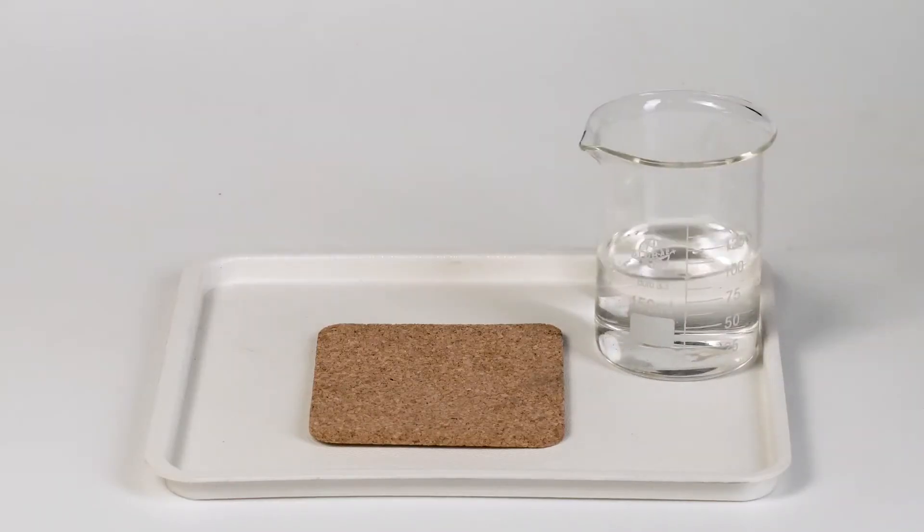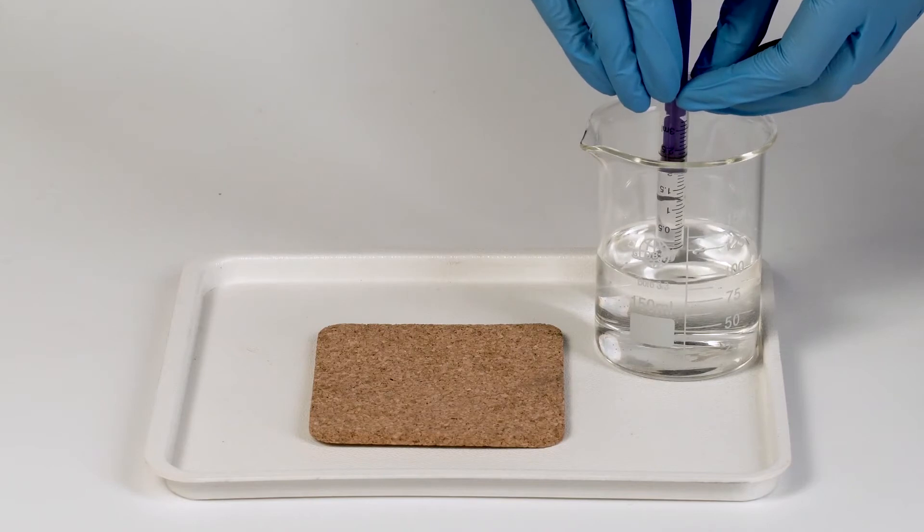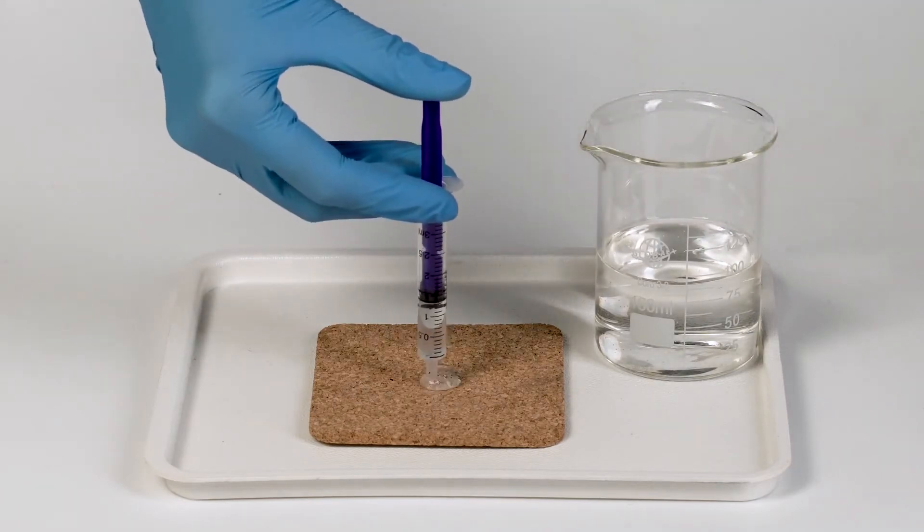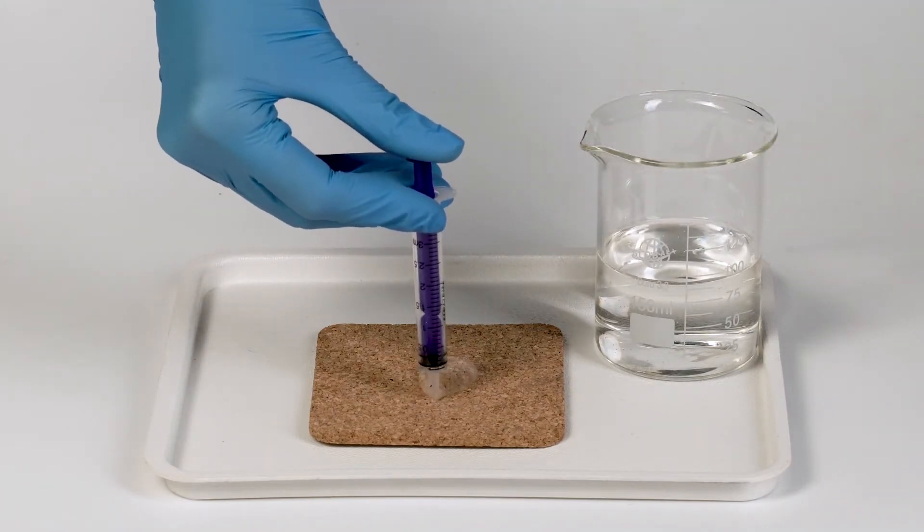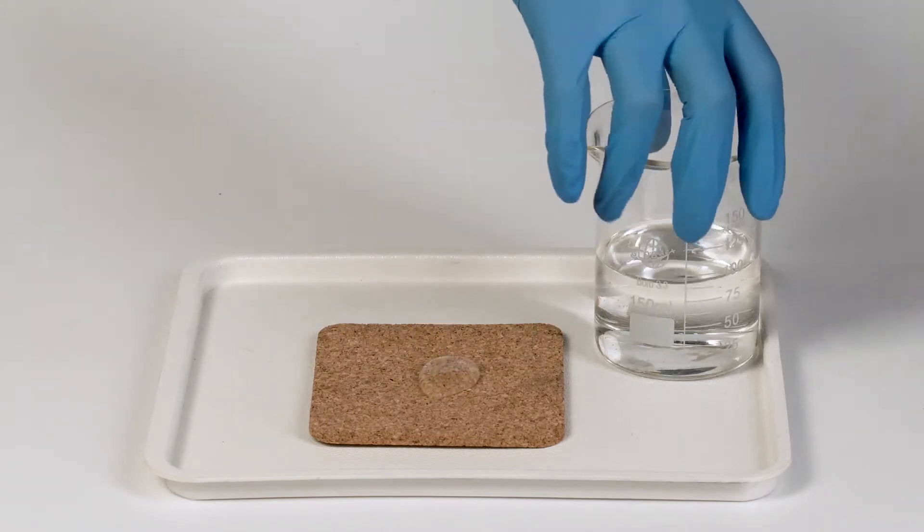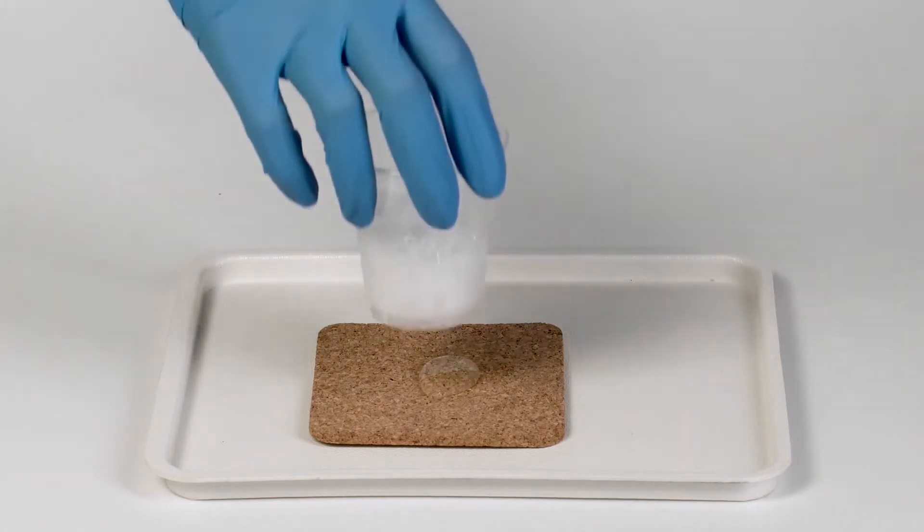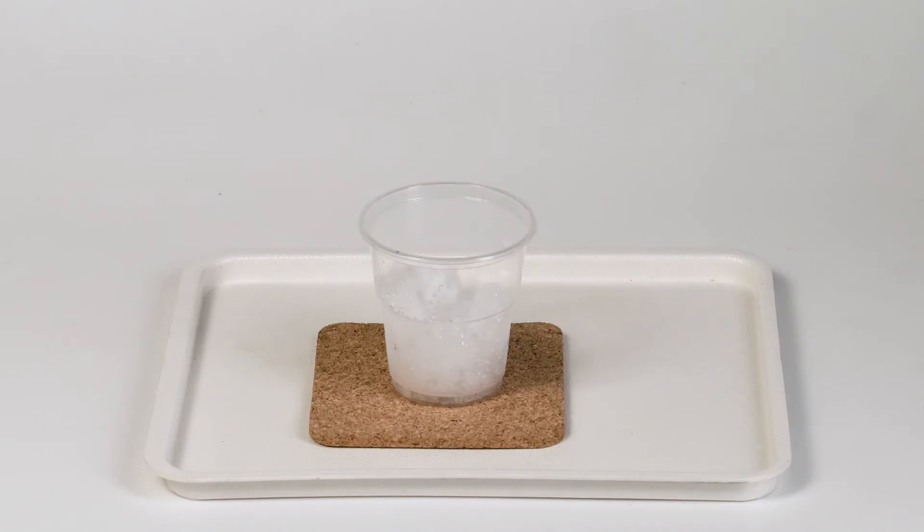Take the cork stand from the starter kit and pour approximately 2 milliliters of water into the center using the syringe. Put the plastic cup, approximately half filled with crushed ice, onto the water puddle on the cork stand.